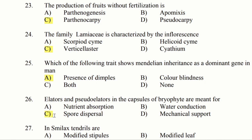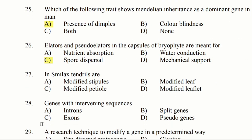Question 27: In Smilax, tendrils are. Option A: modified stipule. Option B: modified leaf. Option C: modified petiole. Option D: modified leaflet. The answer is option A, modified stipule.